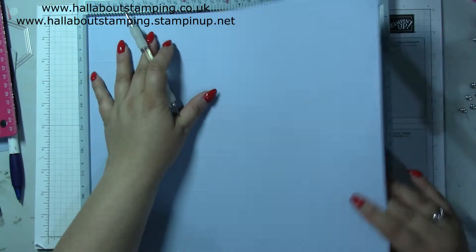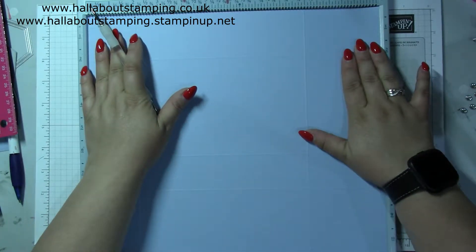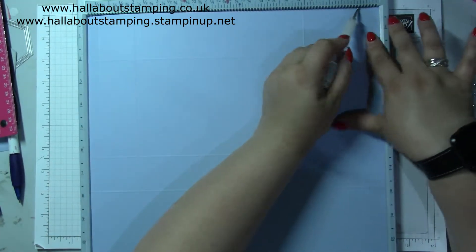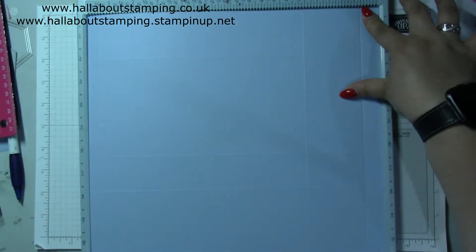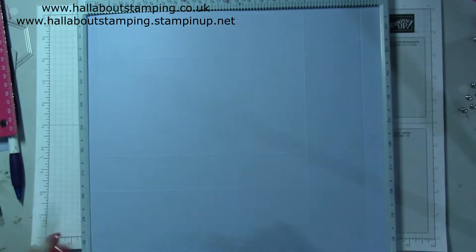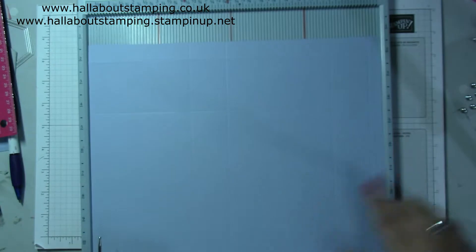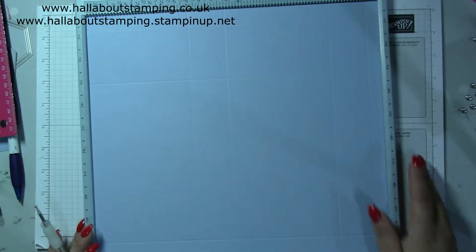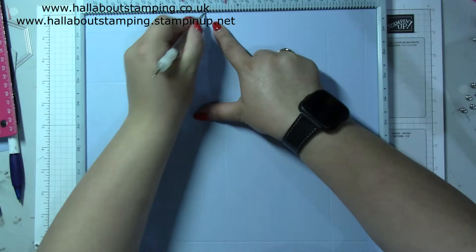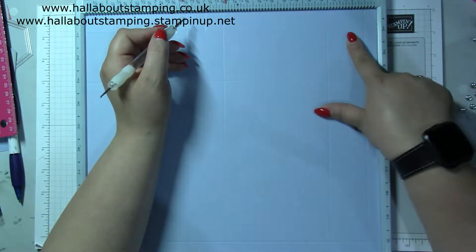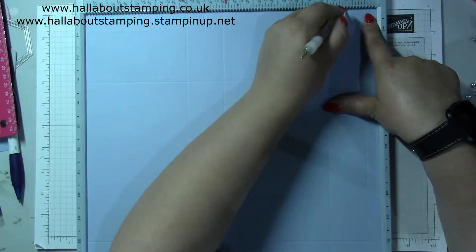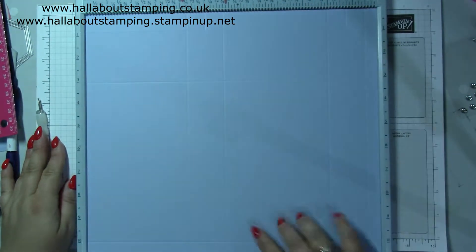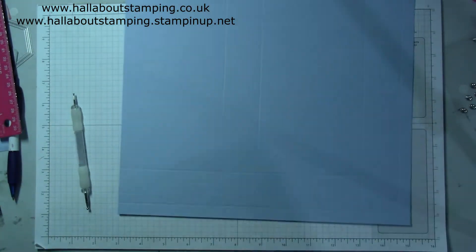Then you're going to turn it over, flip it over and score it at eleven and a quarter, which is 29. Then make sure you get that right, so your tab is that side now because you're going to do a little part score to the first score line and that's going to come at five, so just to your first score four and ten and three quarters. For metric that is twelve and a half and twenty-seven.